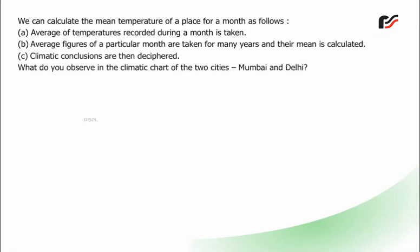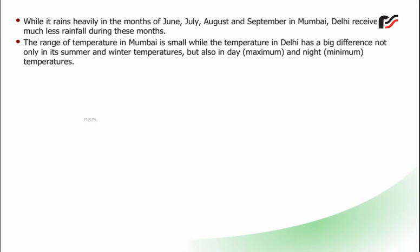Observing the climatic chart of Mumbai and Delhi: while it rains heavily in the months of June, July, August, and September in Mumbai, Delhi receives much less rainfall during these months. The range of temperature in Mumbai is small, while the temperature in Delhi has a big difference not only in its summer and winter temperatures but also in day maximum and night minimum temperatures.